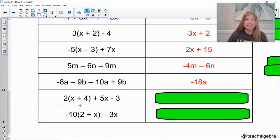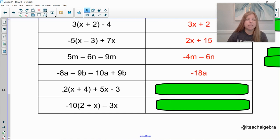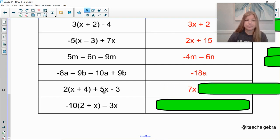Last two. Going back to distributing now. So this would be 2 times x is 2x. And then 2 times 4 is 8. Well, 2 times x is 2x. 2x plus this 5x would leave us with 7x. 2 times 4 we said was 8. 8 minus 3 would leave us with a positive 5.